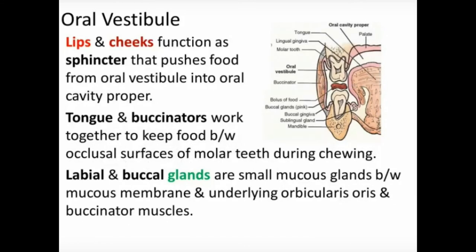The buccinator and tongue work together to keep food between the occlusal surfaces of the molar teeth — the space between the crowns of the maxillary and mandibular teeth. The tongue pushes food from the medial side and the buccinator from the lateral side. If food needs to move from the vestibule into the oral cavity, the buccinator contracts; if food needs to be pushed between the teeth for chewing, the tongue contracts.